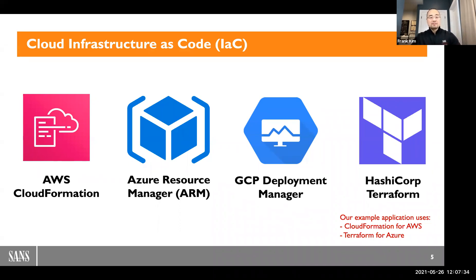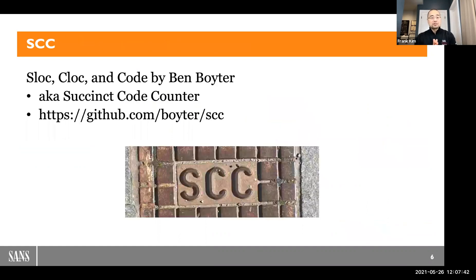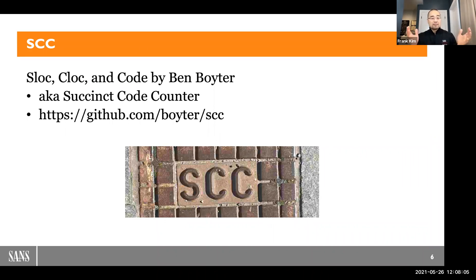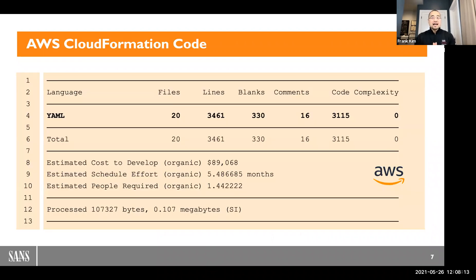I've done many code reviews in my career. Sometimes you want a quicker, high-level view — a summary of what the code looks like before reviewing it. This is where the nice little utility called SCC comes into play. If you haven't used it, I highly recommend checking it out. It's freely available at Ben Boiter's GitHub repo. It stands for SLOC — single source lines of code — also known as Succinct Code Counter.